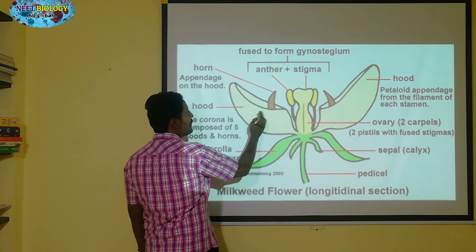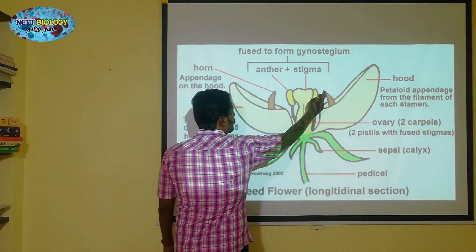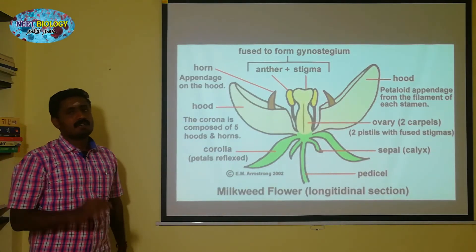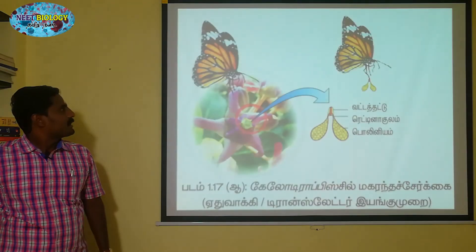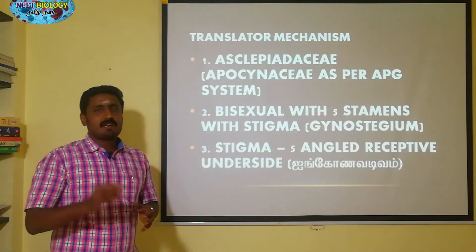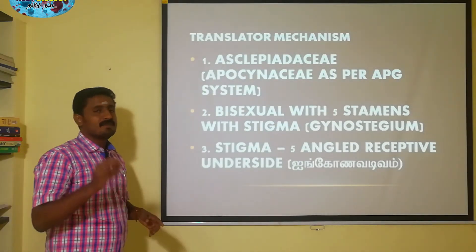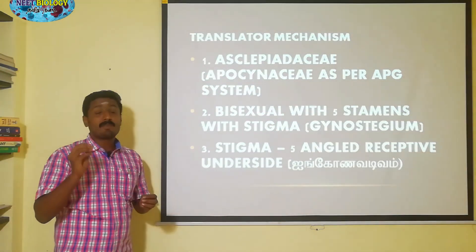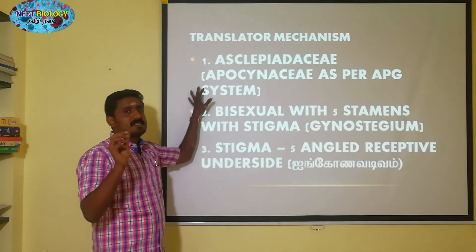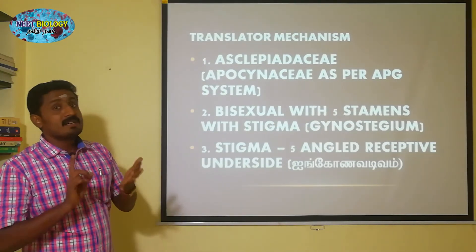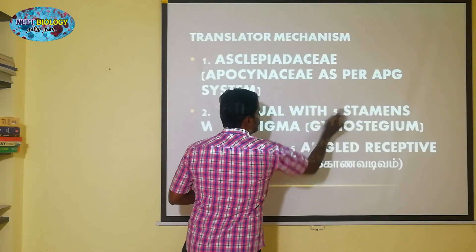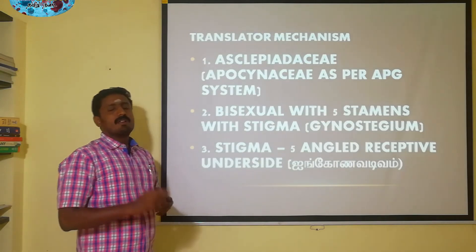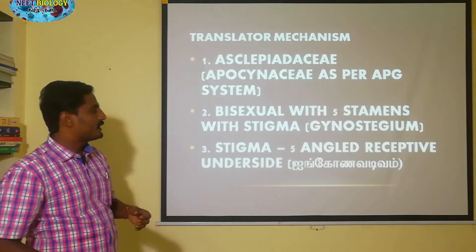This is the nectar structure. To summarize the four points in Tamil Nadu board syllabus: Asclepiadaceae and APG classification, gynostegium, pentagon-shaped stigma, and five stamens with brightly colored hoods.